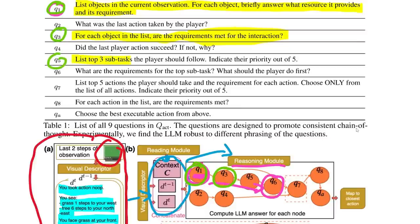Then that information is passed on to node Q5, where it's asked list the top three subtasks the player should follow, indicate their priority out of five. So you see now we're going from what requirements are met to which of these we should actually do. And then Q6, we finally ask what are the requirements for the top subtasks, what should the player do first? So narrowing it down even further into a single item. By the time you get to the node QA, the LLM can use the prior logic and chain of thought to choose an actual action to execute in the environment.